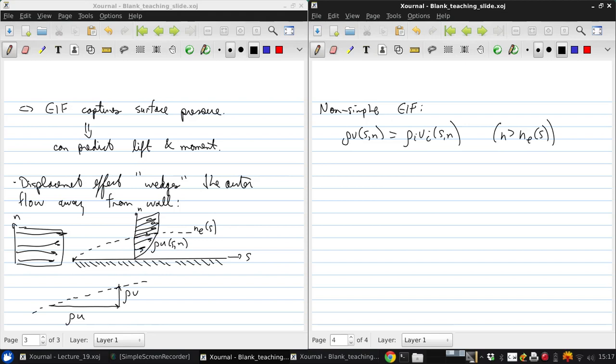So the problem then becomes that of finding ρV of (s,n) and n_E of s. For now, let's assume that we've somehow determined n_E of s. Later, we'll come back to how that would be done. So then, the focus is on finding ρV of (s,n).